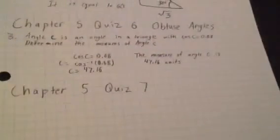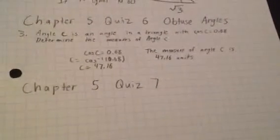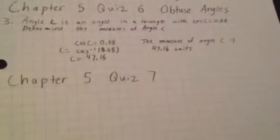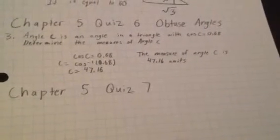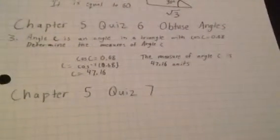This question is very, very simple. Probably the most simple question in the whole quiz. So, what you do is, in your calculator, you do second function cos, then 0.68, and that will get you your answer.